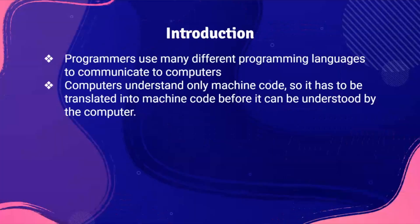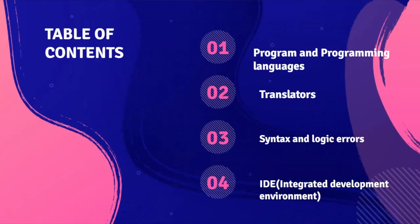Starting off with a brief introduction: programmers use many different programming languages to communicate with computers, but computers only understand their own machine code. So a program needs to be translated into machine code before it can be understood by a computer.